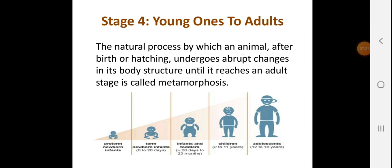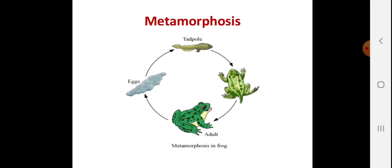Let me show you metamorphosis in humans: from preterm newborn to term newborn, then toddler (up to 2 years), children (2–11 years), and adolescent (12–18 years), which is the puberty period — you are neither completely a child nor completely an adult. In frogs, metamorphosis goes from egg to tadpole to adult frog, as shown in the figures.